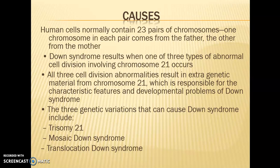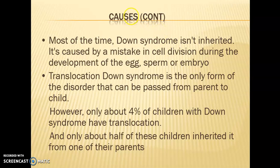There are three genetic variations that can cause Down syndrome. Note that this is not a classification of Down syndrome — it is only the genetic variations. The three genetic variations that can cause Down syndrome are: first, Trisomy 21; second, Mosaic Down syndrome; and third, Translocation Down syndrome.